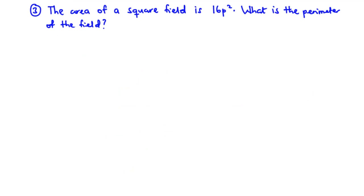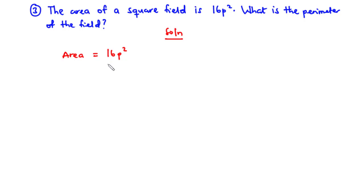For example 3: the area of a square field is 16p squared. What is the perimeter of the field? We are told the area is 16p squared. To find the perimeter we need the length. We know the area of a square is L squared, so L squared equals 16p squared.